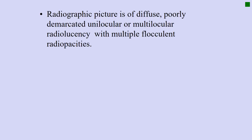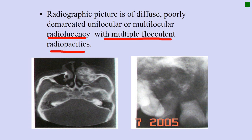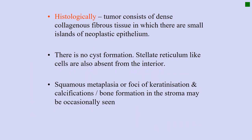Radiographically, desmoplastic ameloblastoma presents as a diffuse, poorly demarcated unilocular or multilocular radiolucency with multiple flocculent radio-opacities — it is a mixed radiolucent lesion. Unlike conventional ameloblastoma, which is purely radiolucent, here you have both radiolucency and radio-opacities. You can clearly see these in the CT image and radiograph. So the two key differences are: common in the maxillary anterior region, and radiographically it is a mixed lesion.